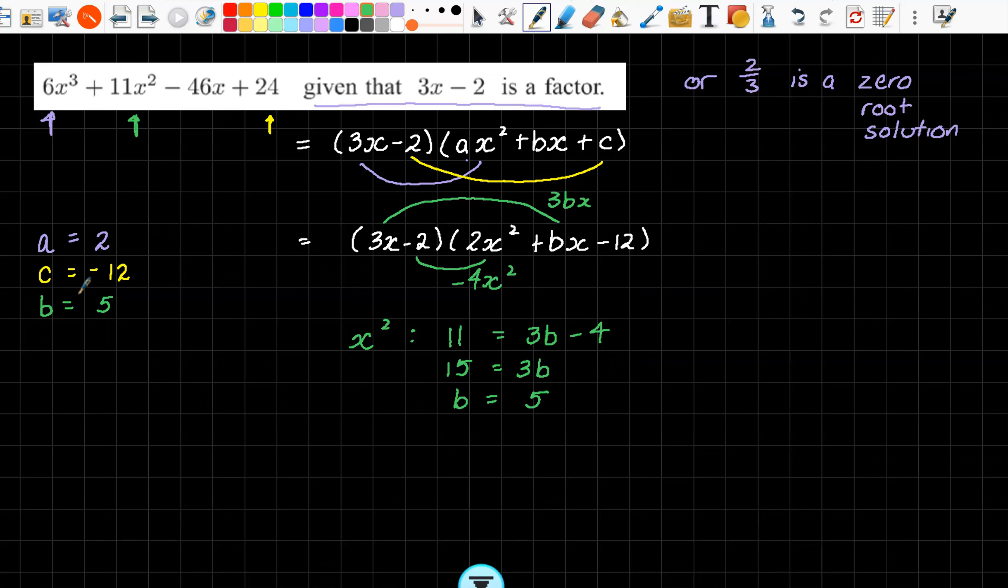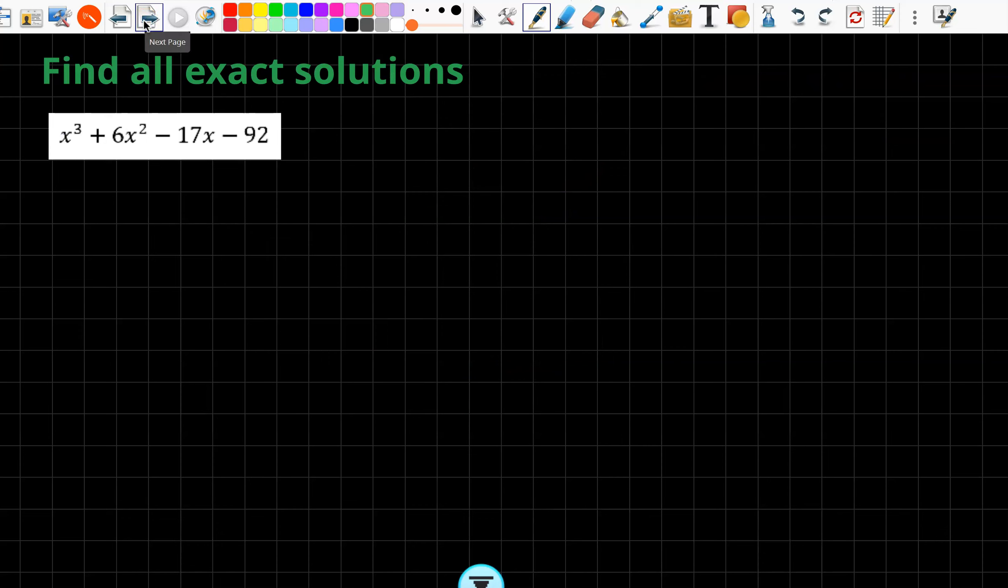So we found the a, the b, the c. We're done. It hasn't said do anything else. All over Red Rover. Next question.